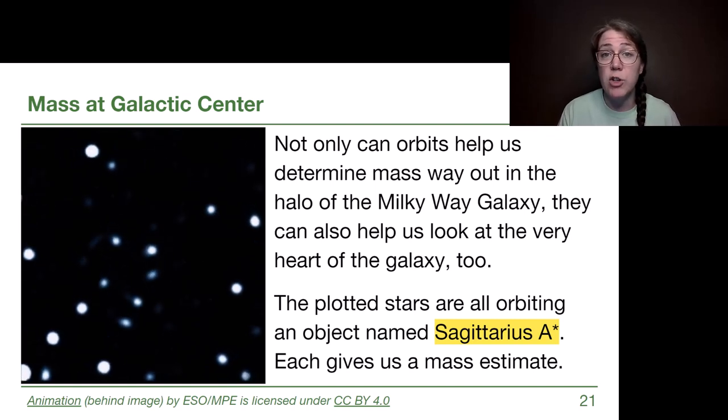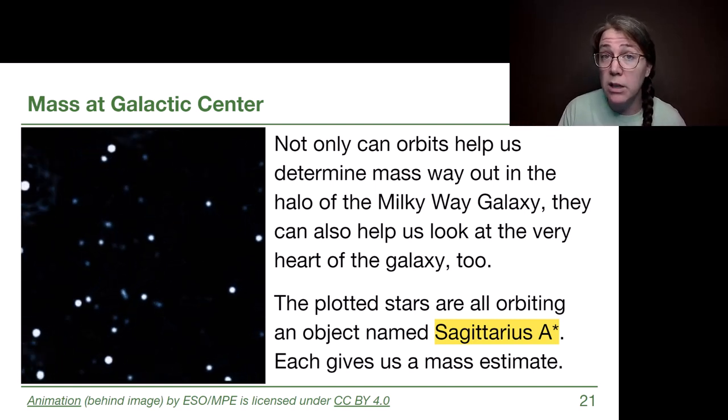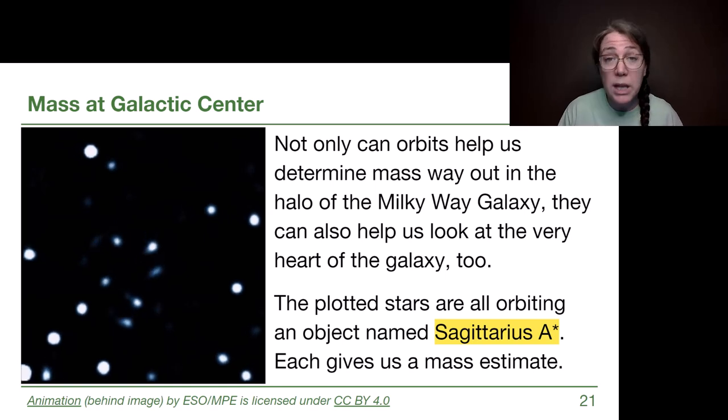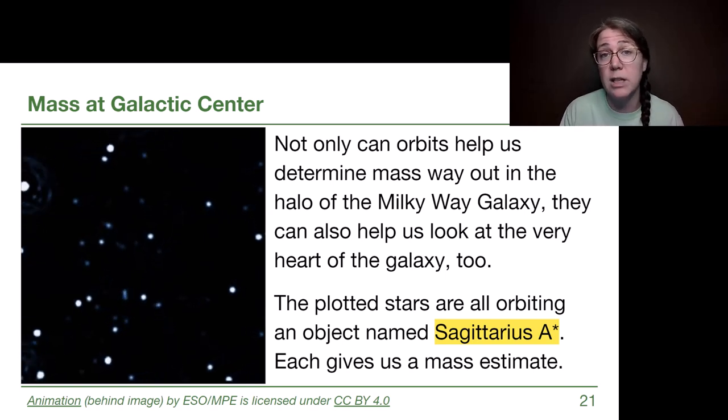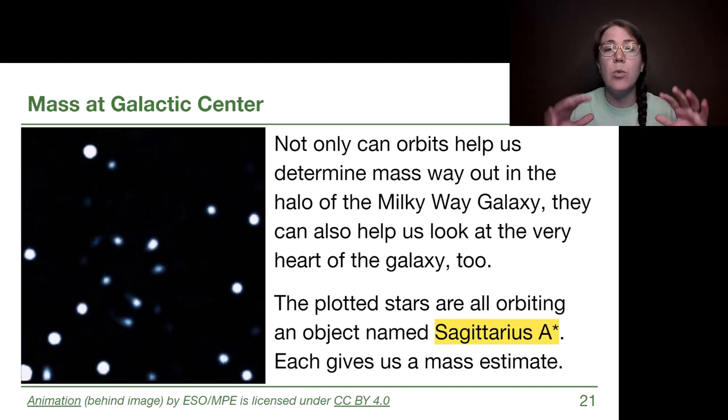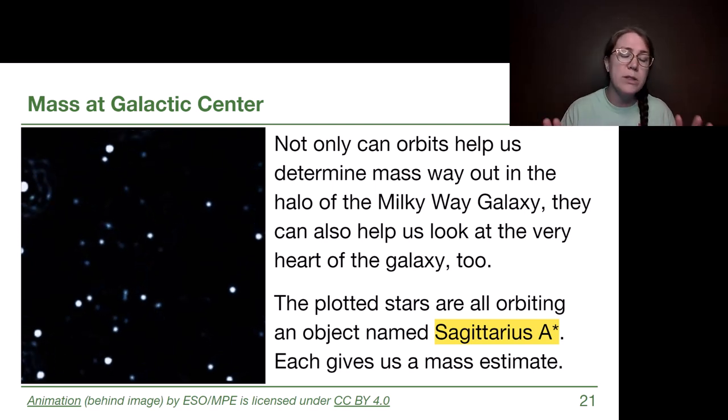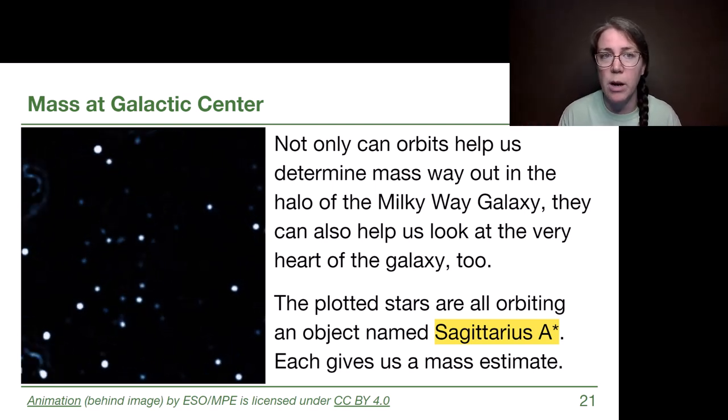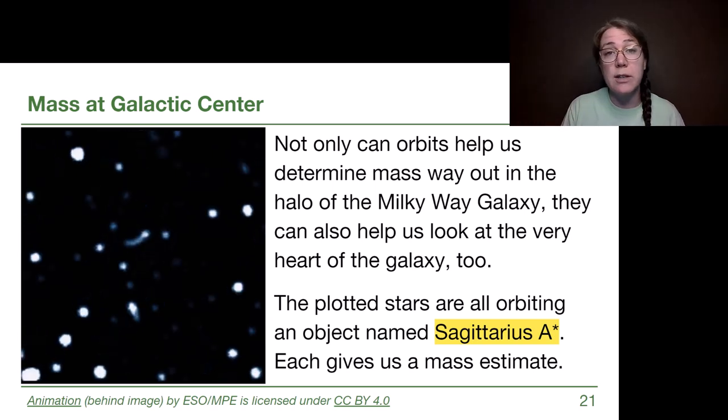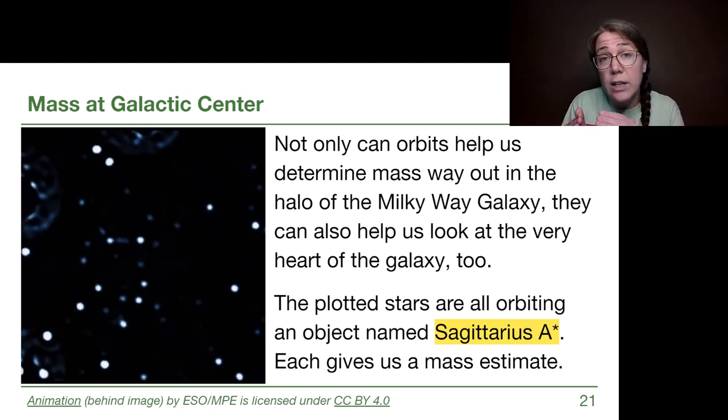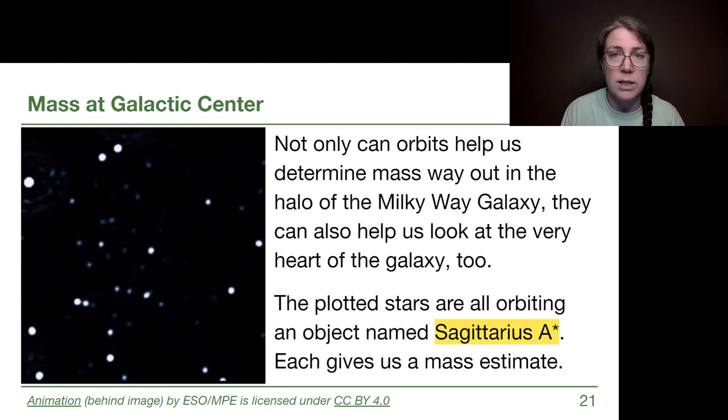We can watch them over time with a snapshot like this. We can also look at an animation of data taken over a long period of time. And what this tells us is each one of those stars is an independent measurement of the mass of this object. Now the mass of this object turns out to be 4.5 million solar masses, so millions of times more mass than our sun.